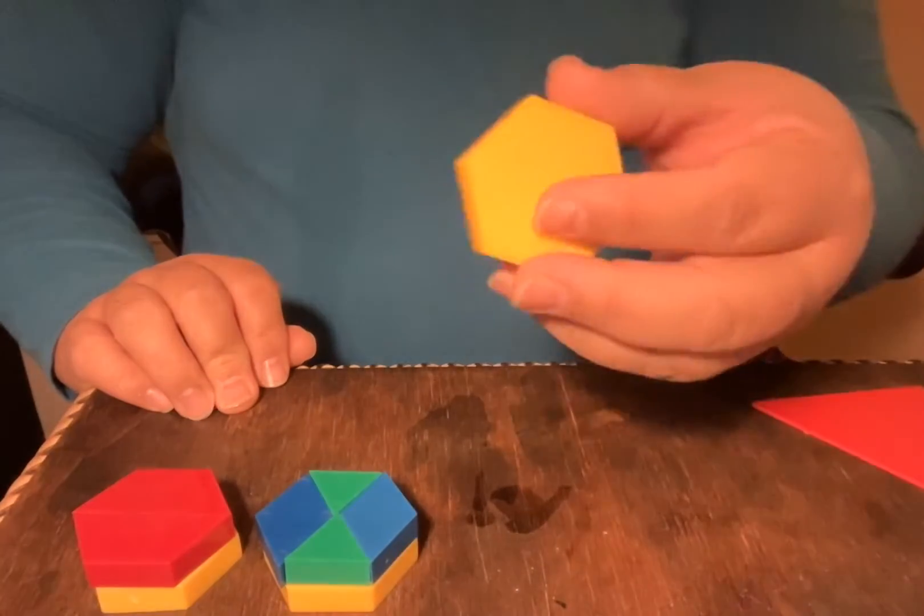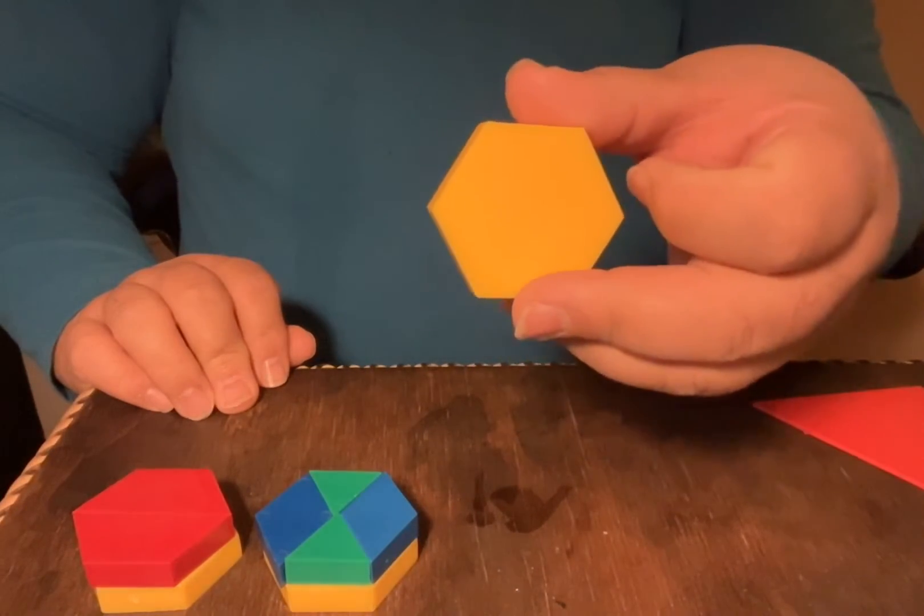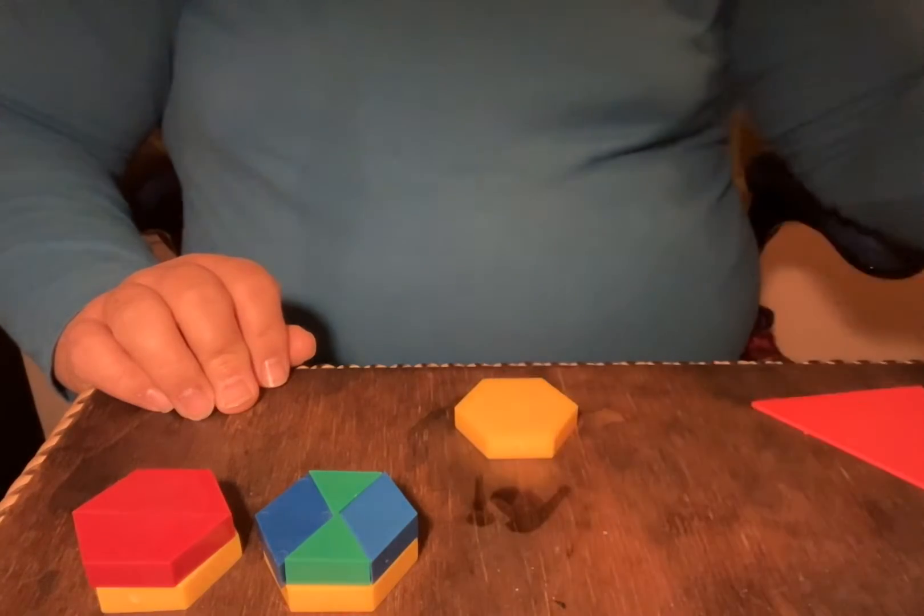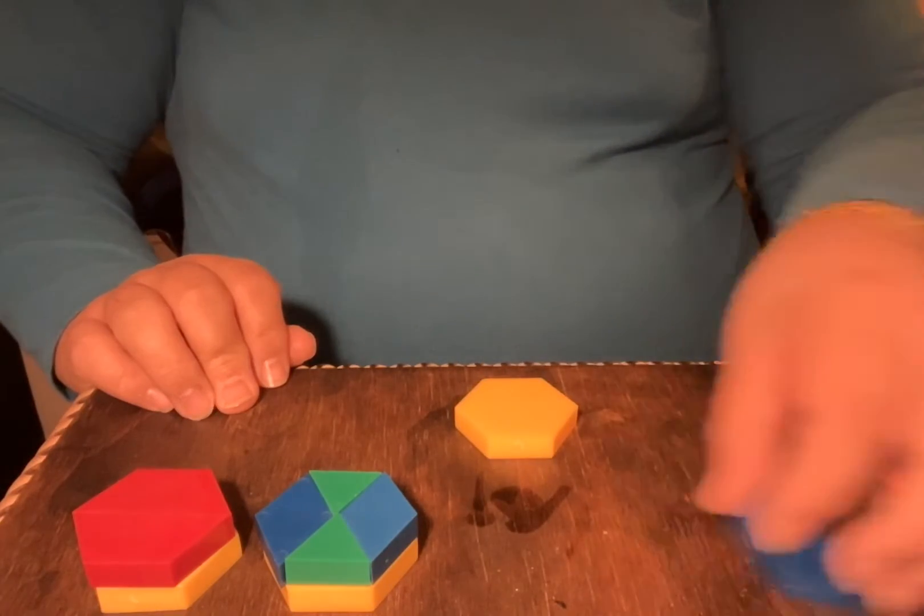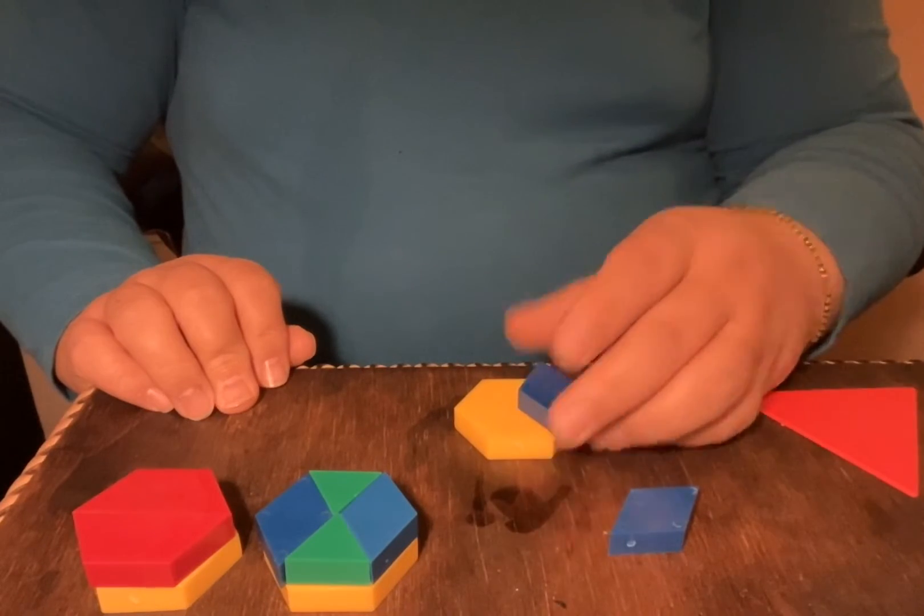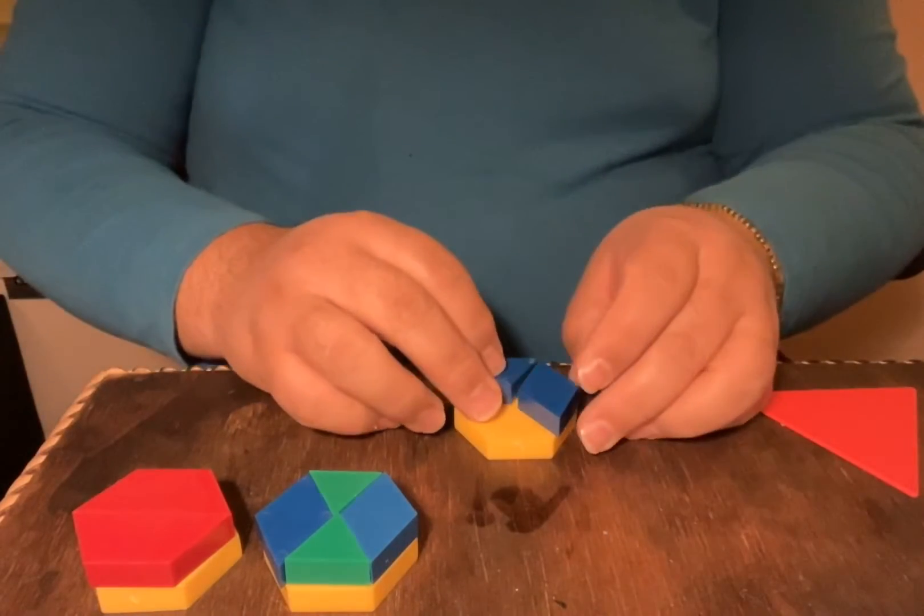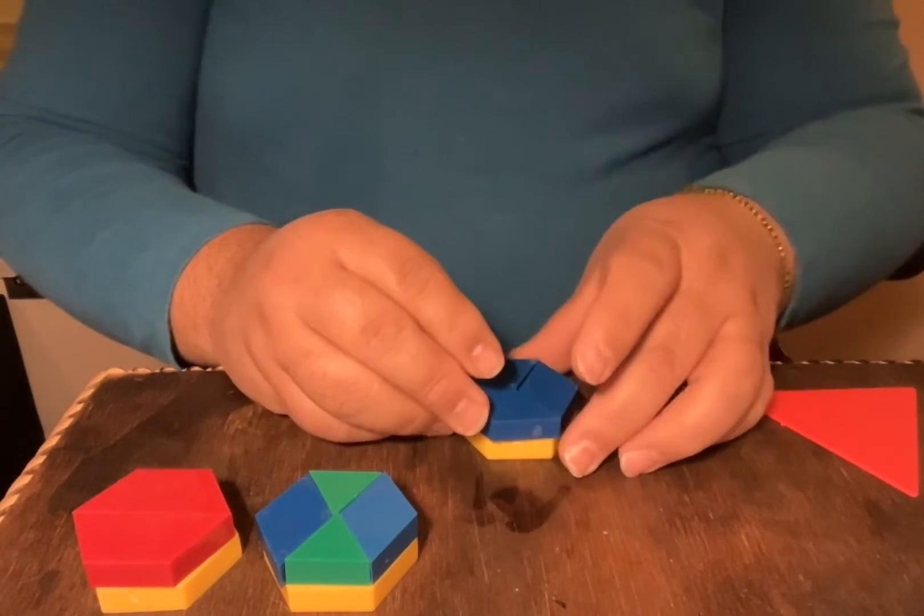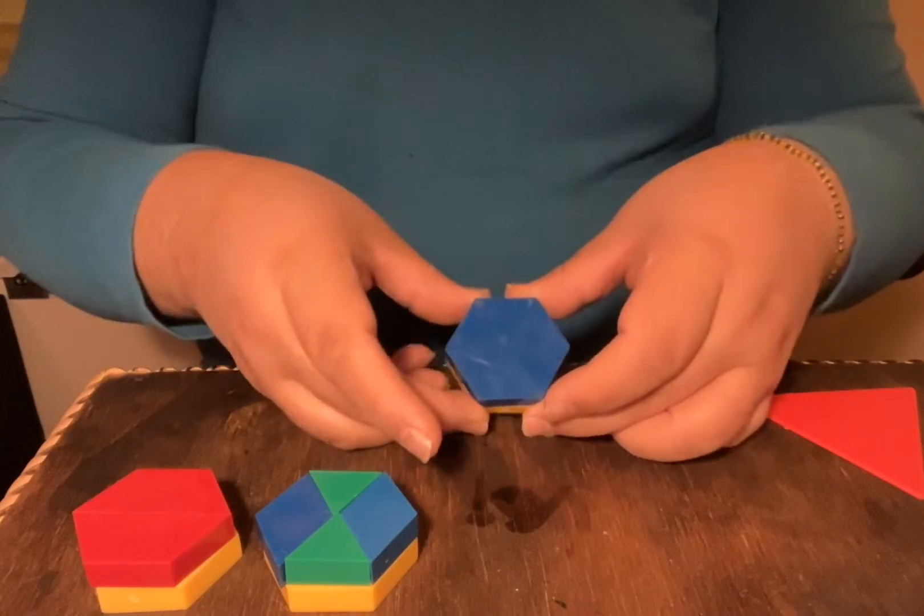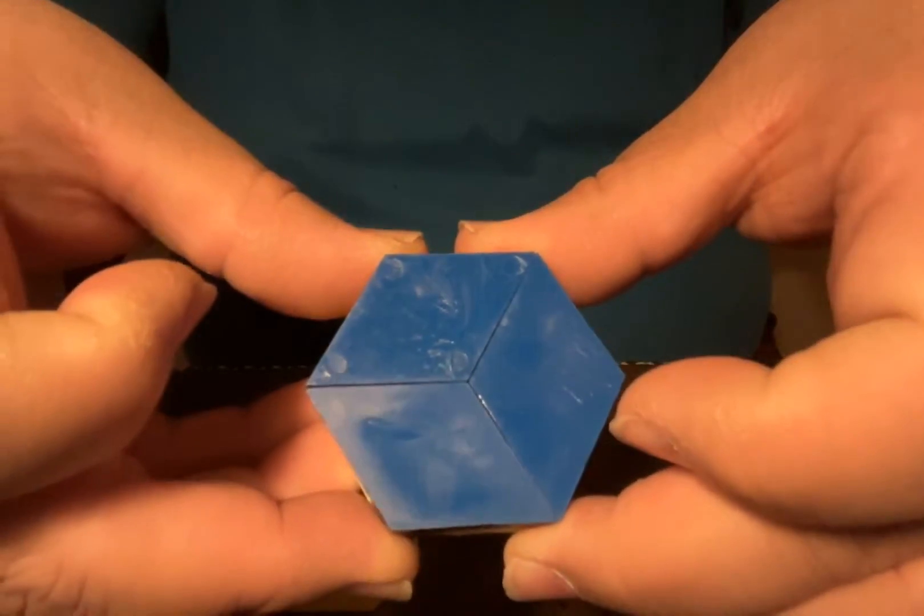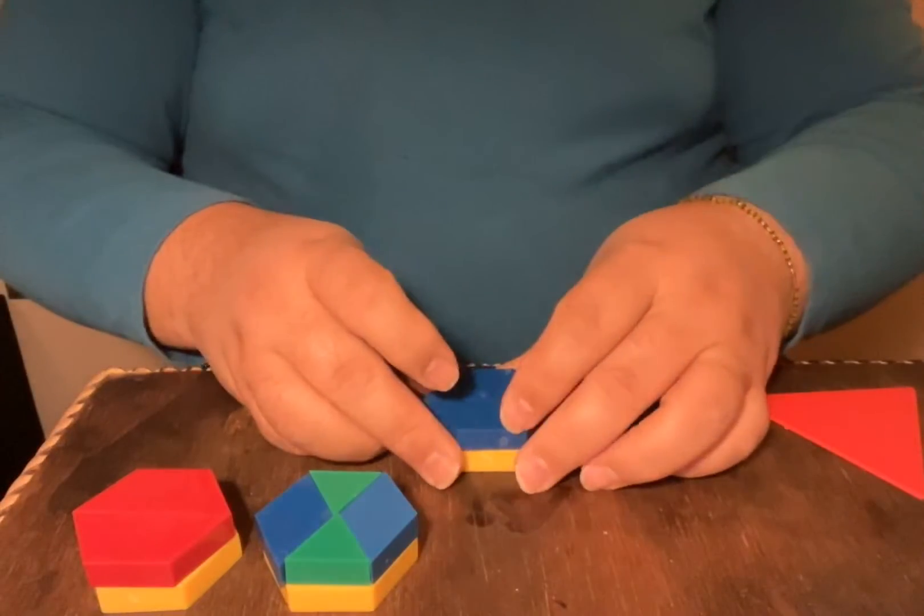I can also make a hexagon with just three rhombuses. So my three rhombuses would be like this. You see, you put the three rhombuses and it forms a hexagon.